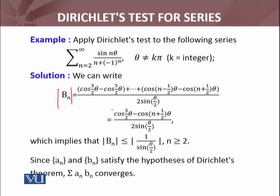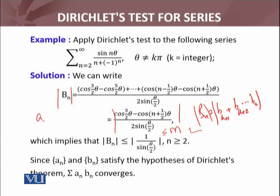Which implies that |Bn| is less than or equal to 1 over sin(θ/2) for n greater than or equals to 2, because cos θ and sin θ values remain between minus 1 and 1. This is of course sine θ/2 less than or equal to some real number m greater than 1. So bn also satisfies the condition for |bk+1 + bk+2 + ... + bn|.